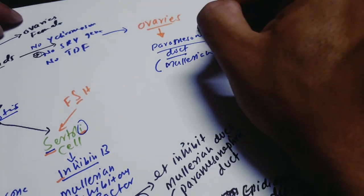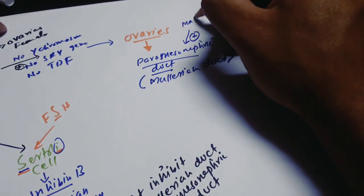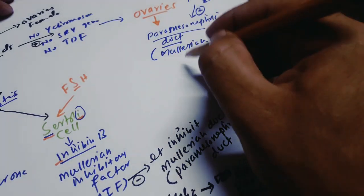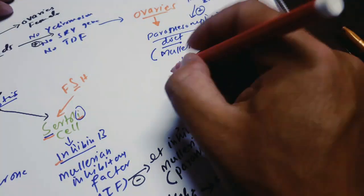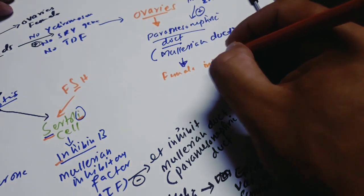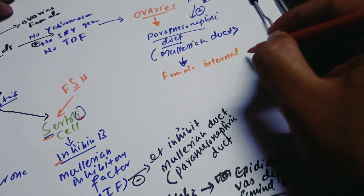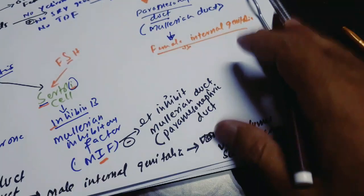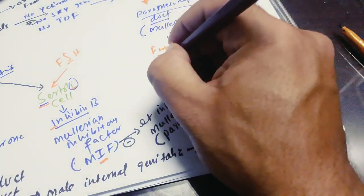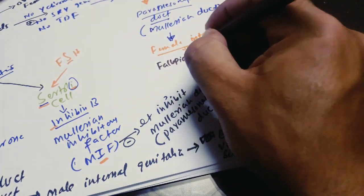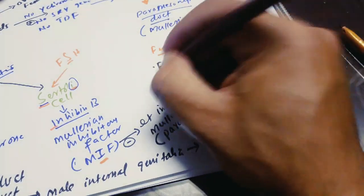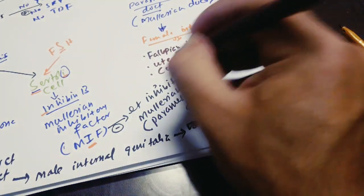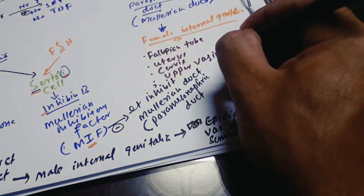Under the influence of maternal estrogen, the paramesonephric (Müllerian) duct differentiates into female internal genitalia. The female internal genitalia consists of the fallopian tube (also called the uterine tube), the uterus, the cervix, and the upper one-third of the vagina.